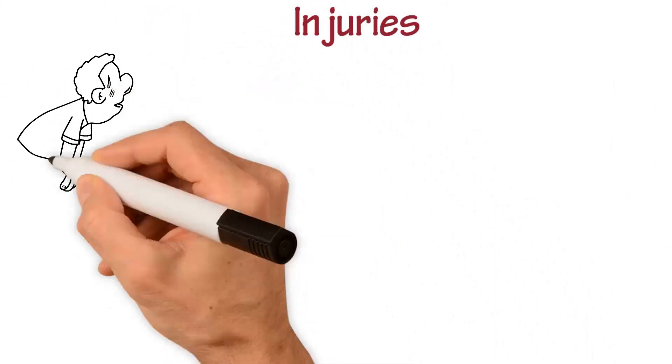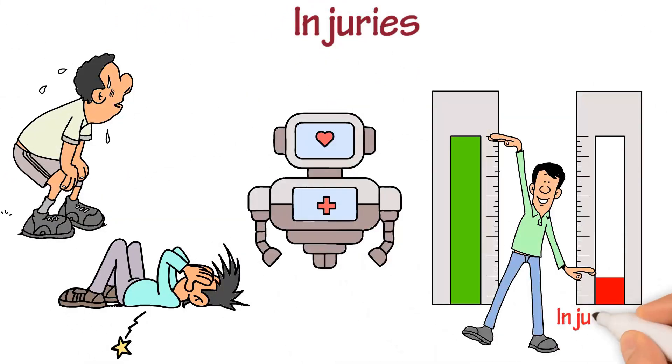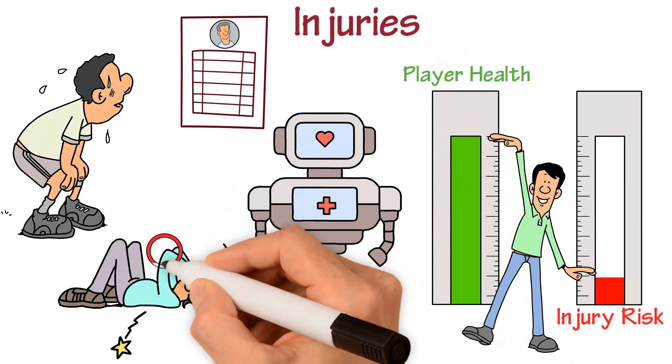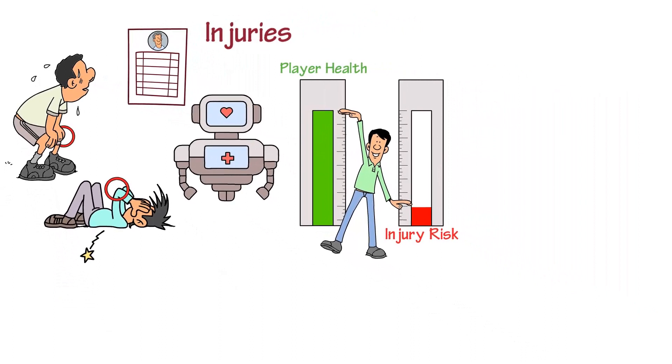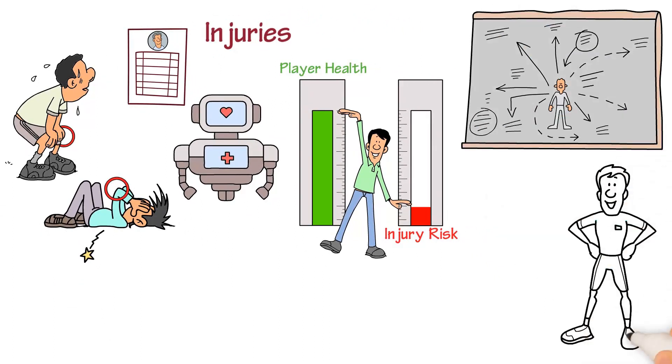Injuries are a common concern in soccer, and AI algorithms are being used to reduce the risk of injury and improve player health. These algorithms analyze player performance data and identify potential risk factors, providing real-time insights into player health. This information informs injury prevention strategies, helping teams keep their players healthy and on the field.